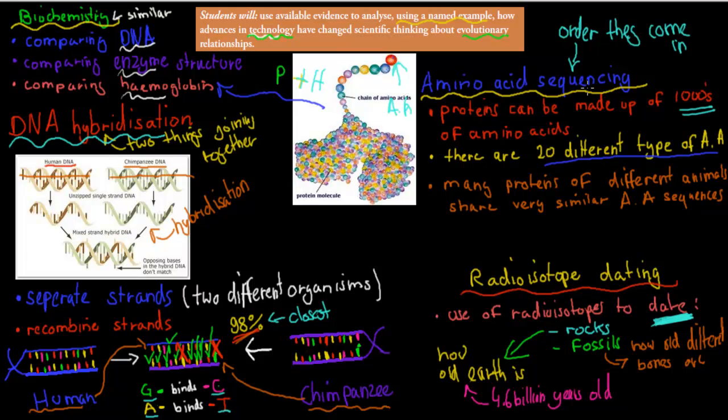We have the amino acid sequencing. Where we look at which order these amino acids come. In proteins, because the proteins are made up of amino acids. And the more we have, the more similarities we have, the closer we are related as well. So that's another technology here, amino acid sequencing.